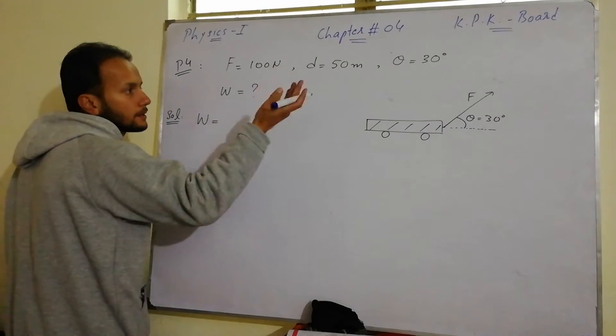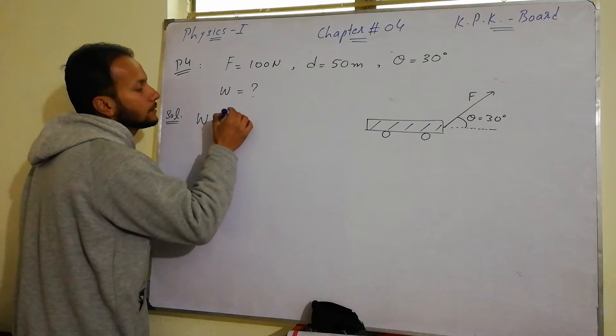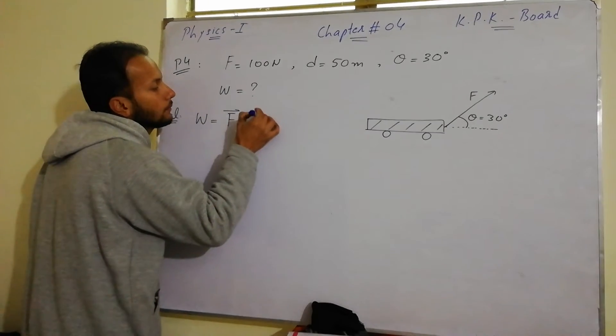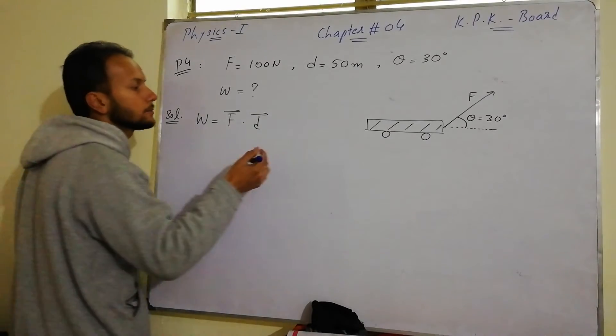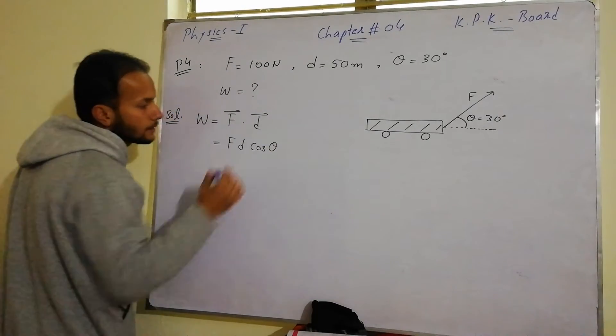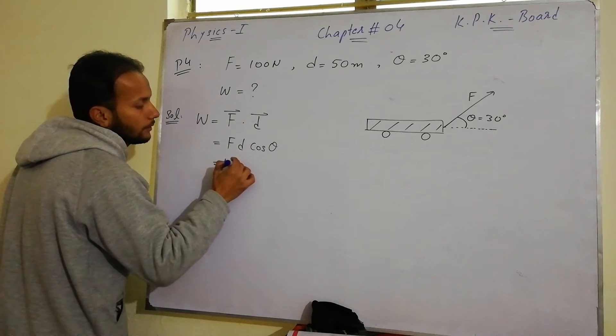Work done is force into displacement distance. But here we have angle value. And work done equals force times distance times cosine of theta, where theta is the angle with horizontal when the man pulls.